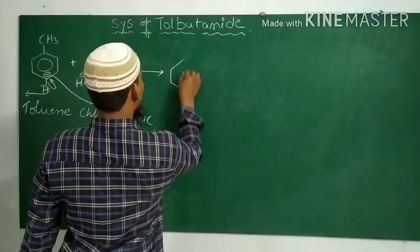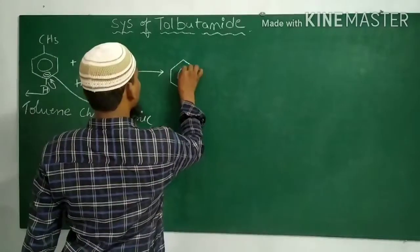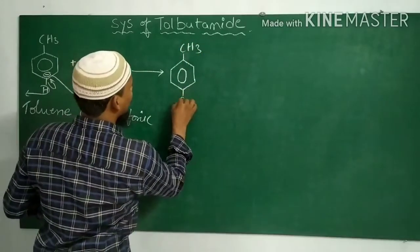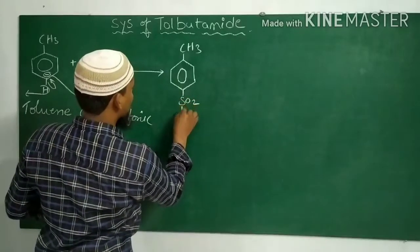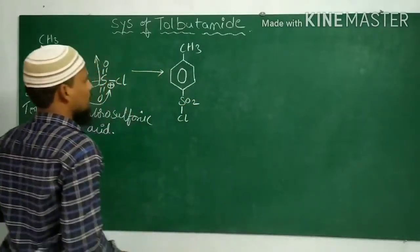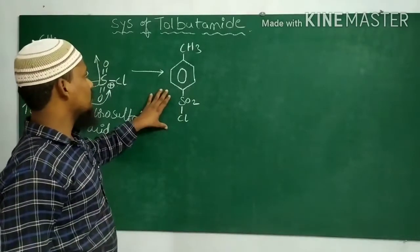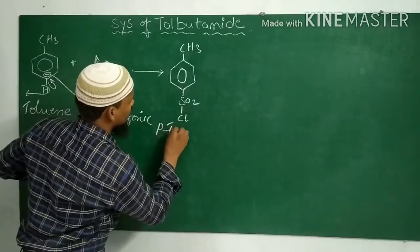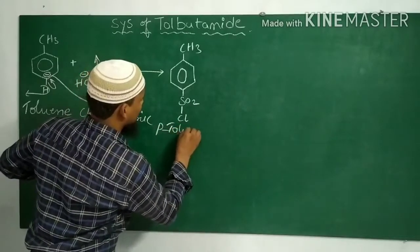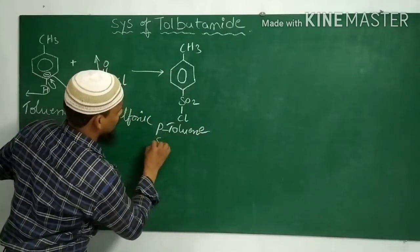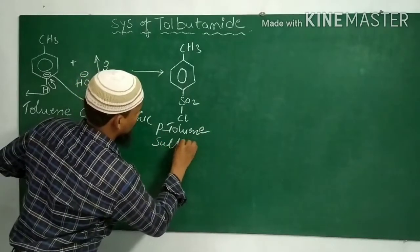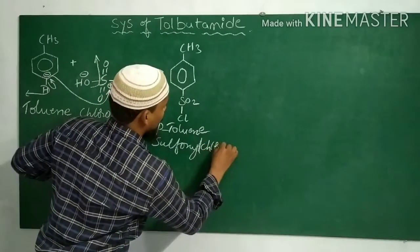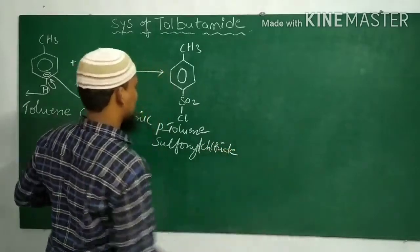The resultant molecule contains an SO2Cl group. This is para-toluene sulfonyl chloride.